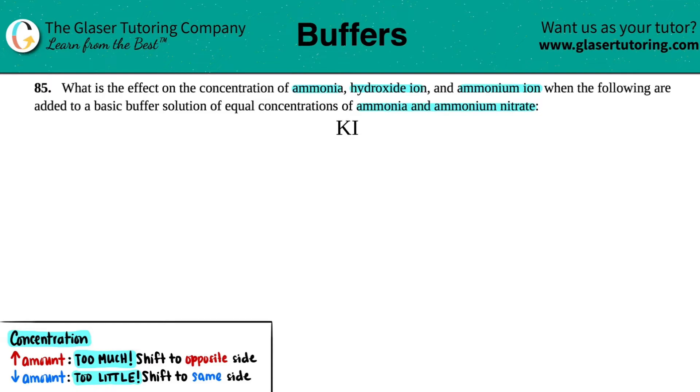We're talking about what's going to happen to the ammonia, and ammonia is always NH3. So anytime that you see NH3, that's ammonia. Hydroxide ion is OH-, so we got to figure out what's going on there. And ammonium, which is a polyatomic, which is NH4+.